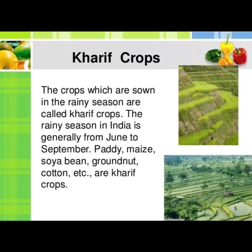Our first crop is Kharif crops. The crops which are sown in the rainy season — sown means Ugana — are called Kharif crops. The rainy season in India is generally from June to September. Paddy, maize, soya bean, groundnut, pulses, cotton etc. are the crops of Kharif.